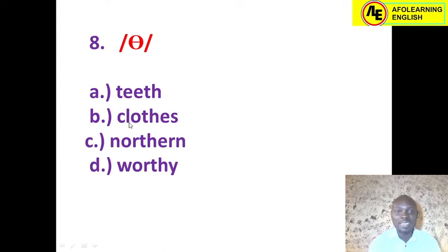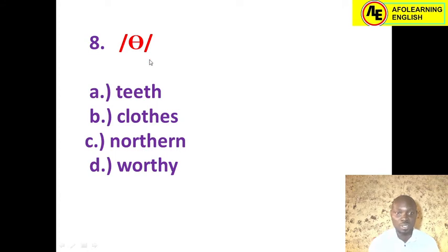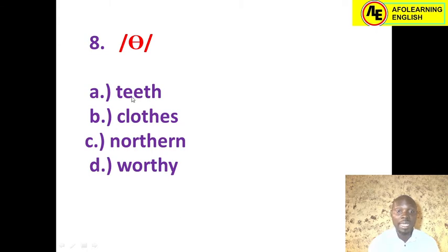Number eight: this is a dental fricative /θ/, often represented by letters TH. It is a voiceless dental fricative; its counterpart is the voiced /ð/. Option A is 'teeth' — yes, this is close to the answer. Option B is 'clothes' — TH here gives us the voiced /ð/. Option C is 'northern' — another voiced /ð/. Option D is 'worthy' — also voiced. Options B, C, D give us the voiced version, but we need the voiceless /θ/. The correct answer is option A: teeth.